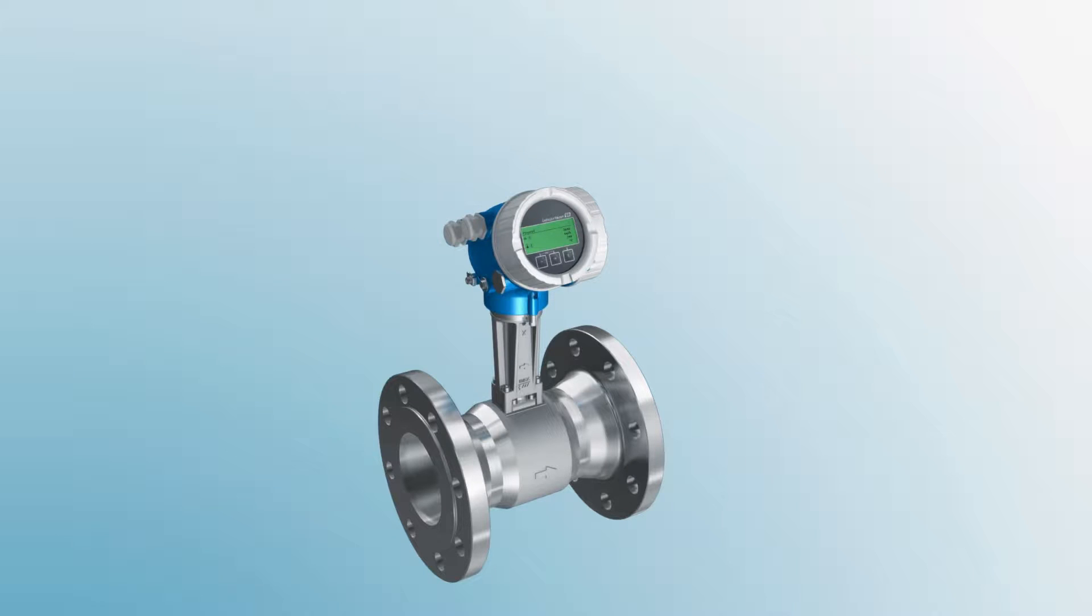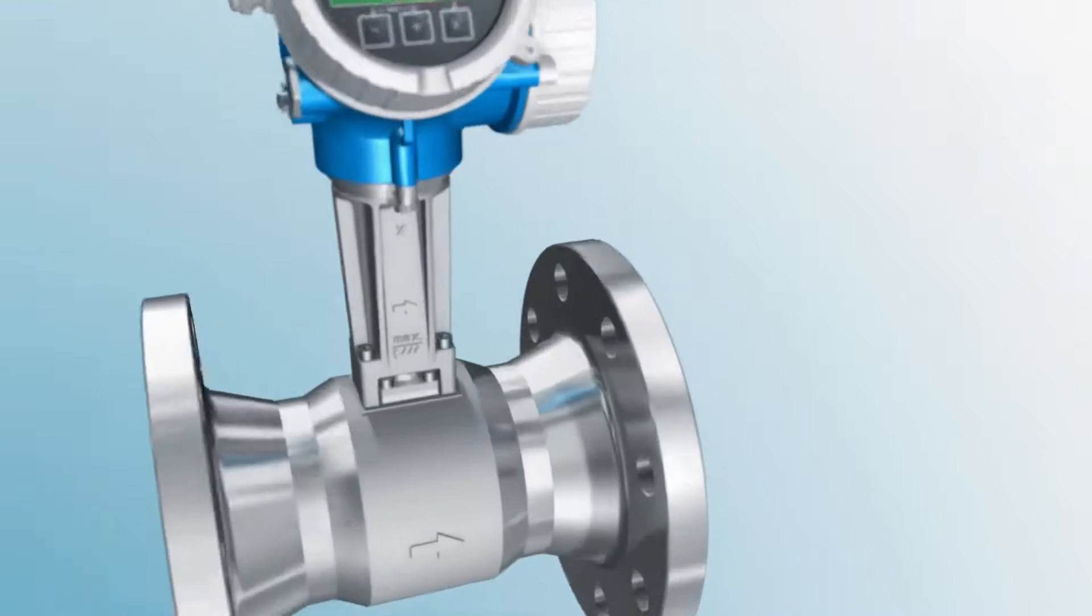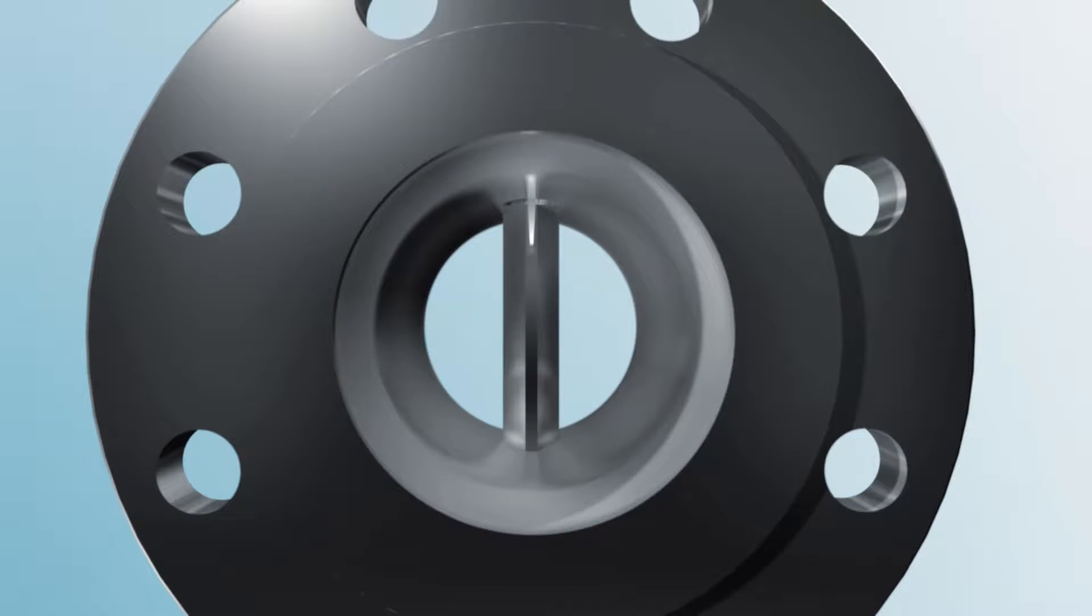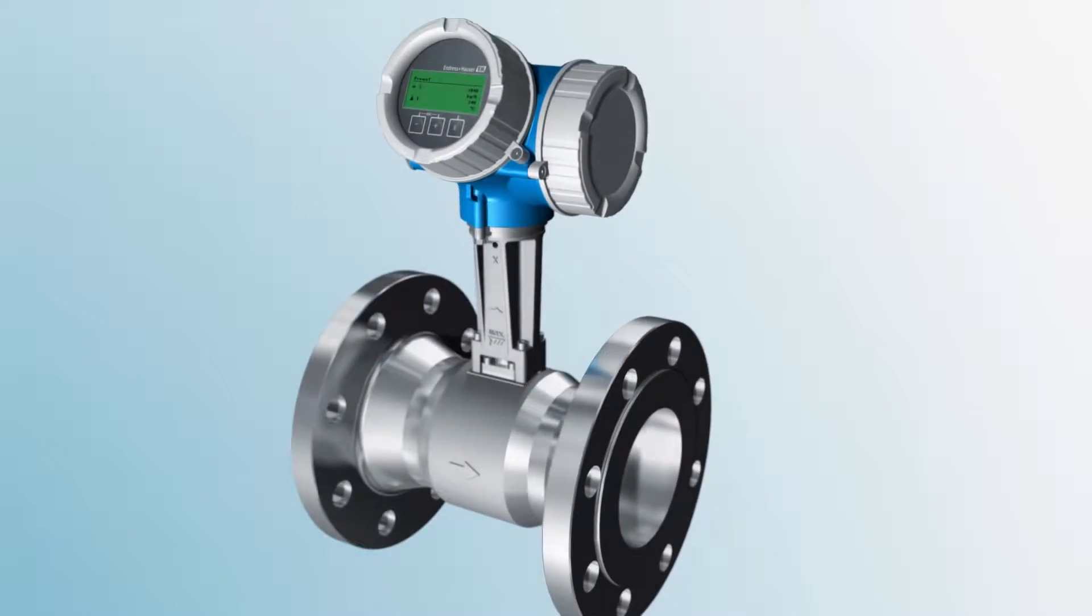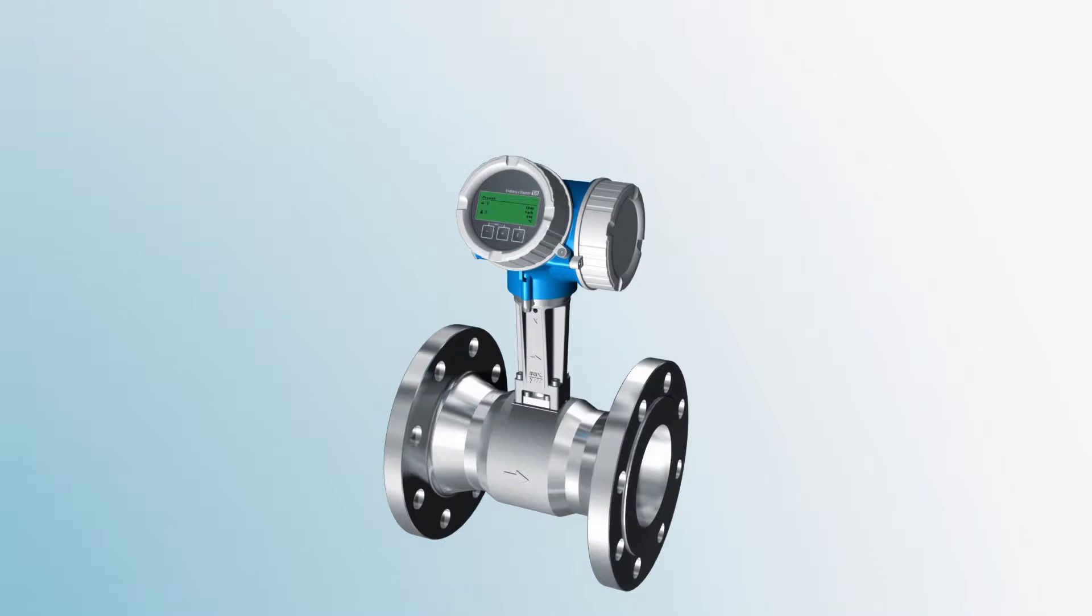Not only does it ensure precise and comprehensive energy management, it also detects the risk of water hammers thanks to its unique wet steam measurement. But what are the different types of steam and how can Prowold 200 measure the steam quality?